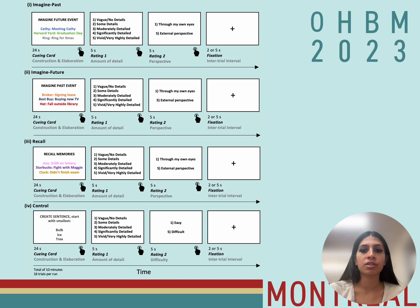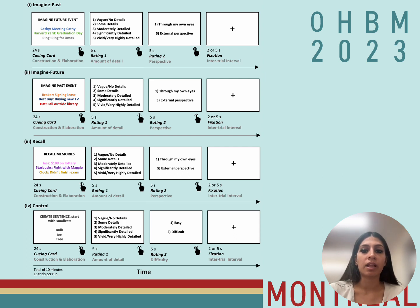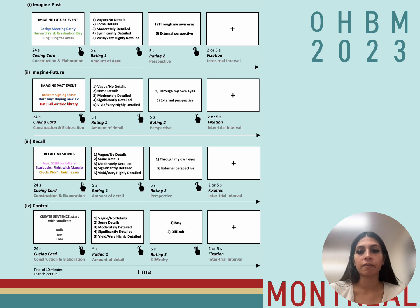In the control trials, each trial also began with a construction phase in which participants were required to order three objects by physical size and insert them into a sentence — for example, 'X is smaller than Y and Y is smaller than Z.' Once participants had silently said the sentence to themselves, they made a button press marking the end of the construction phase. Participants then had to elaborate on the representation of the nouns and generate as much detail about their meaning and visual appearance as possible. Following elaboration, which ended at the 24-second mark, participants completed two rating scales: a five-point scale on amount of detail generated and a binary scale assessing task difficulty.